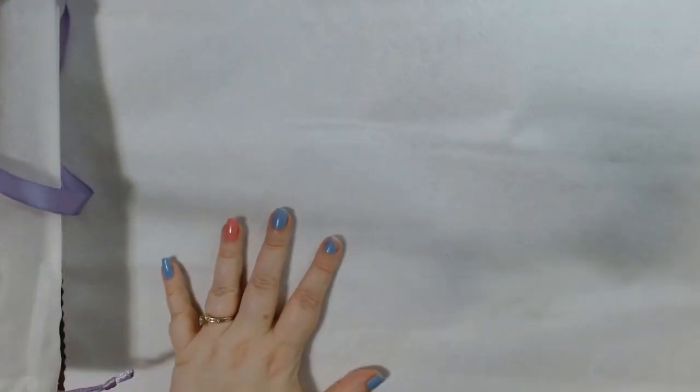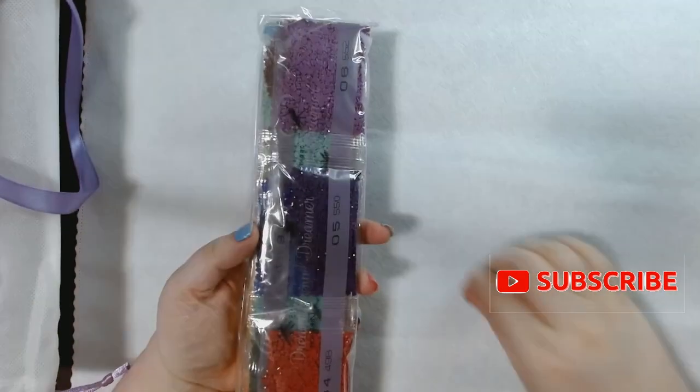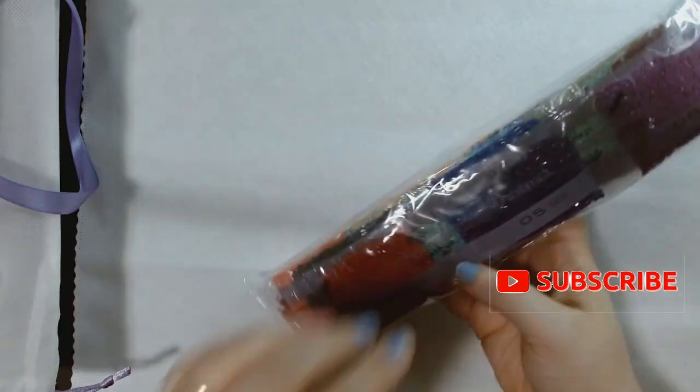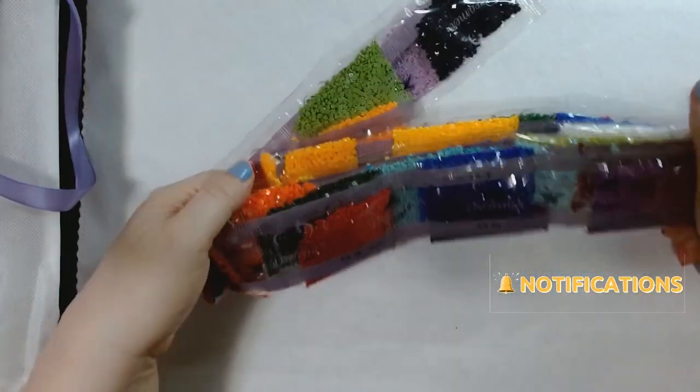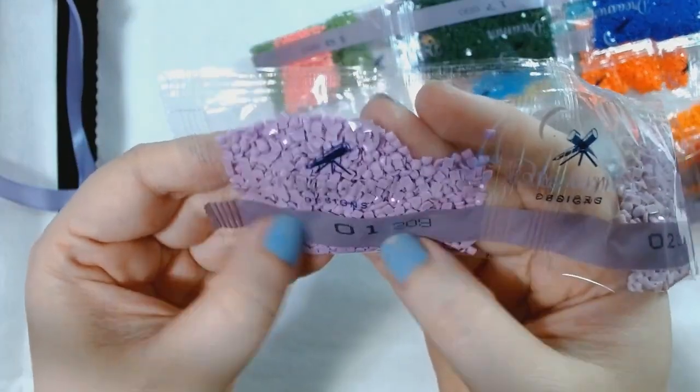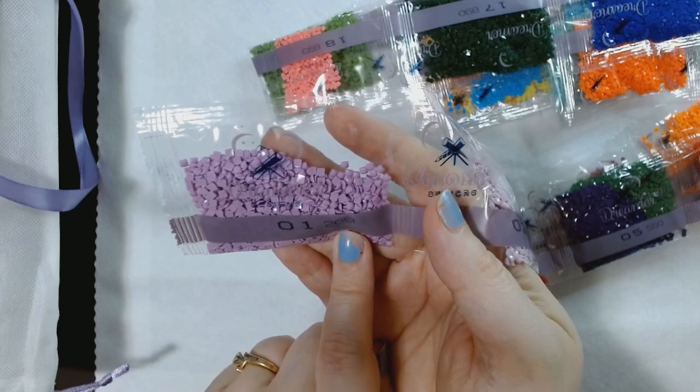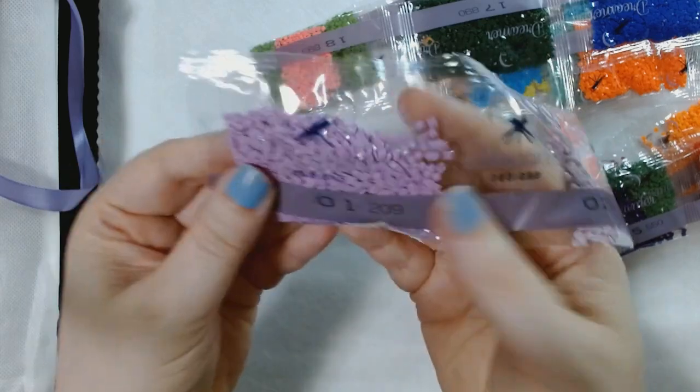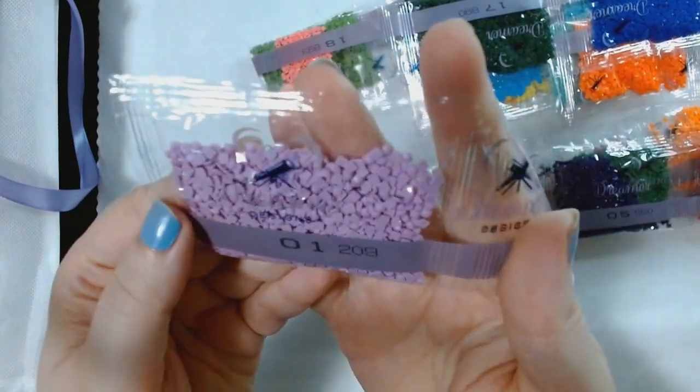I'm going to turn this over so we can go through the drills. It'd be a little bit easier this way. And then we'll flip it back again and we'll try to find out where the ABs are. So the way that Dreamer Designs does their drills, I believe, is it's in DMC order. So we'll start there. So number one on the legend is numbered, and then 209 is the DMC number.